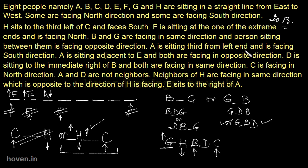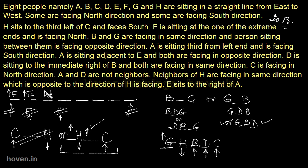A is sitting third from the left end and facing south — ok as we already confirmed. D is sitting to the immediate right of B and both face the same direction — B is upwards so D is to the right, and we can now fix D's direction as upwards too. C is facing north — ok. A and D are not neighbors — A is here and D is away, so that's correct. Neighbors of H are G and B, both facing upwards, opposite to H. E sits to the right of A — A faces downwards so right is towards this side — correct. This is the final arrangement.